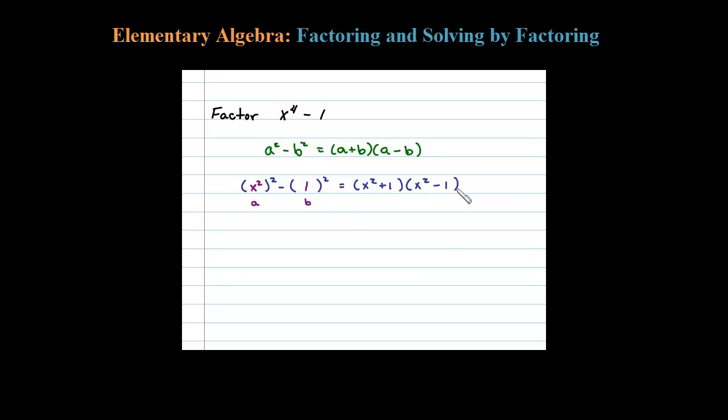Now we're not quite done here because I notice we have difference of squares again. Turns out sum of squares does not factor over the real numbers, so we'll just rewrite that. Then factoring x squared minus 1.